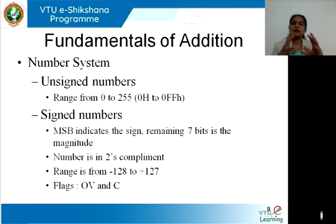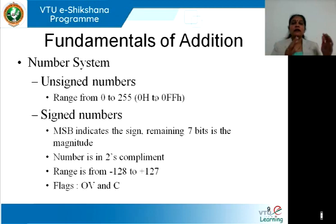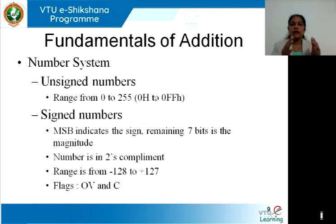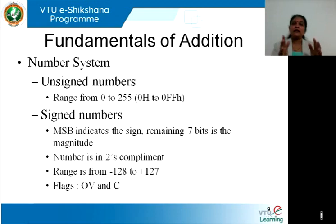If you have a negative number, find its 2's complement to get the true value. The range for a signed 8-bit number is minus 128 to plus 127, which implies that any positive number beyond 127 leads to overflow, and any negative number below minus 128 also leads to overflow. The flags that are affected by addition instructions are the overflow flag and the carry flag.